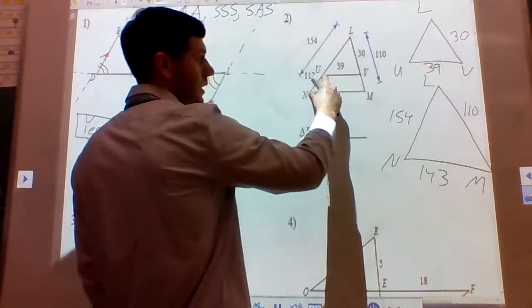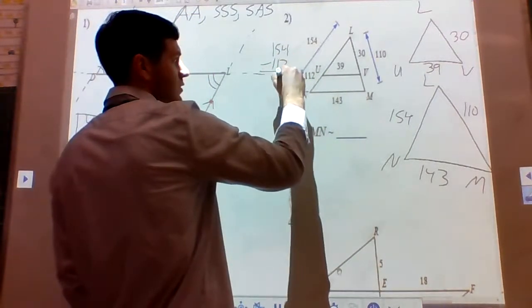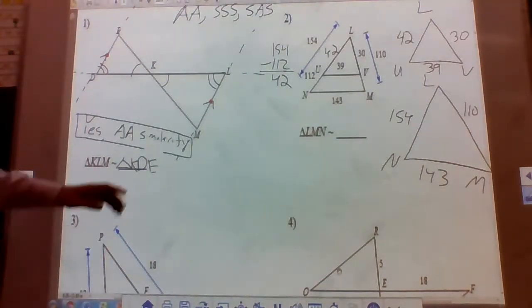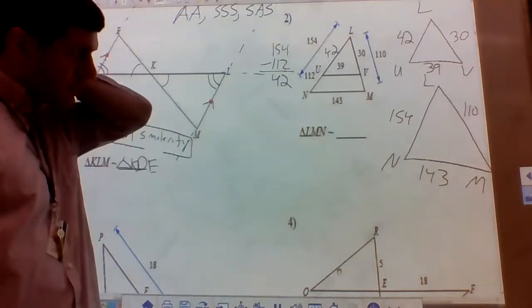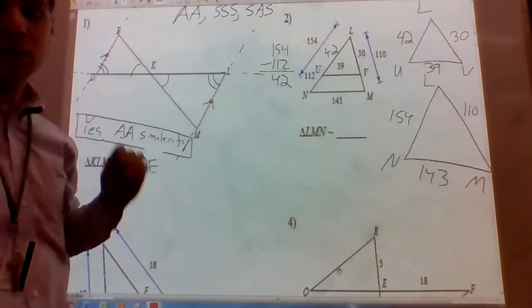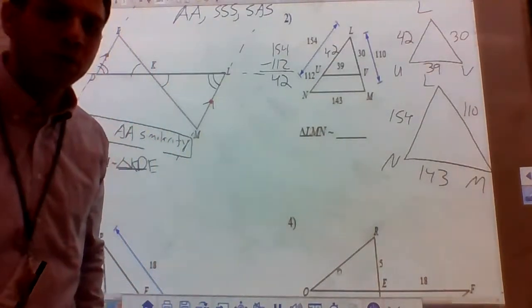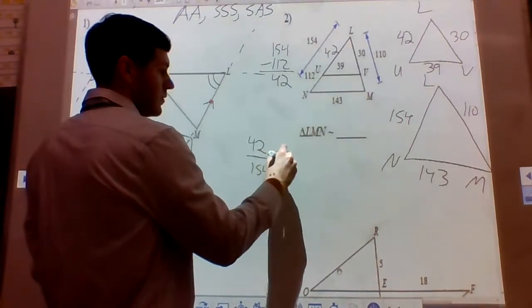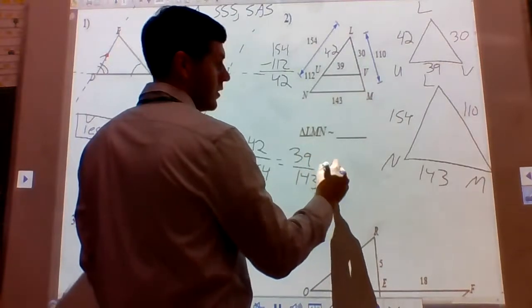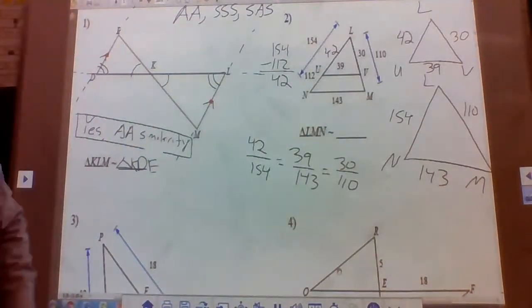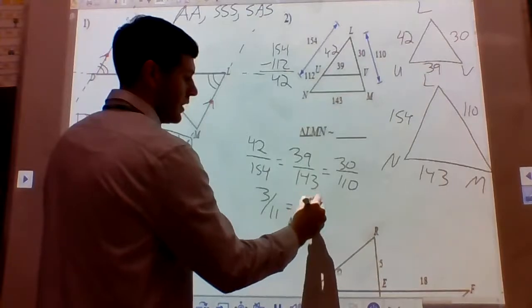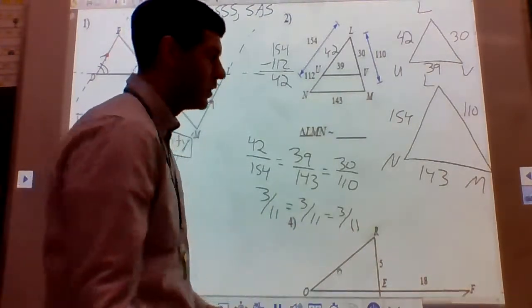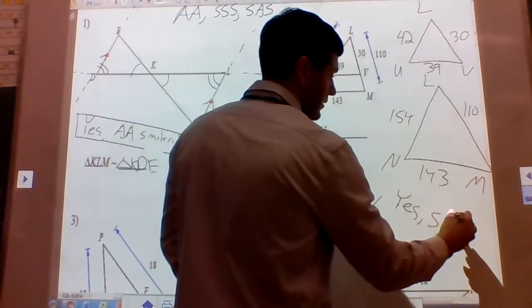If the whole side is 154 and UN is 112, then 154 minus 112 gives us 42 — so that piece is 42. We have all the information for all three sides, so let's check side-side-side. We need the sides to be proportional. So we compute 42 over 154, 39 over 143, and 30 over 110. Using a calculator, we get 3/11, 3/11, and 3/11. The ratios of all corresponding sides are equal, so our scale factor is 3/11, and the triangles are similar by side-side-side.